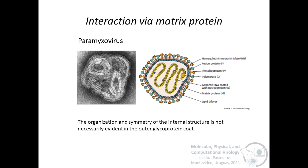Paramyxovirus glycoproteins interact with the matrix protein associated with the inner surface. And in this case, organization and symmetry of the internal structure is not necessarily evident in the outer glycoprotein coat. It's for this reason that these viruses have a pleomorphic form.